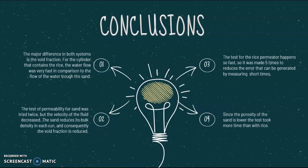Conclusions. The major difference in both systems is the void fraction. For the cylinder that contains the rice, the water flow was very fast in comparison to the flow of the water through the sand.